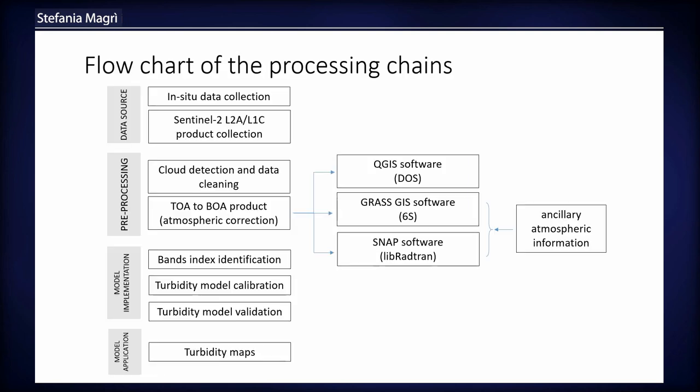This is the scheme of our work. First, we collected in-situ data and the corresponding satellite data for the same day. We had to remove all data with cloud presence. Because not all Sentinel data were available as bottom-of-atmosphere reflectance, we had to perform atmospheric correction, and three open-source softwares were tested and compared: QGIS, GRASS GIS, and SNAP. The results were compared to Level 2 Sentinel-2 data, as we wanted a homogeneous dataset.